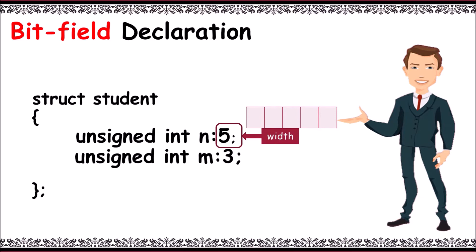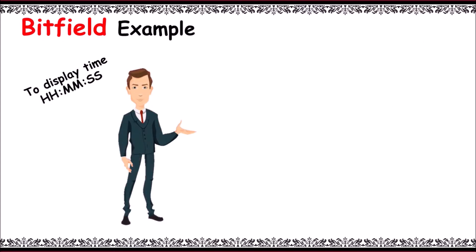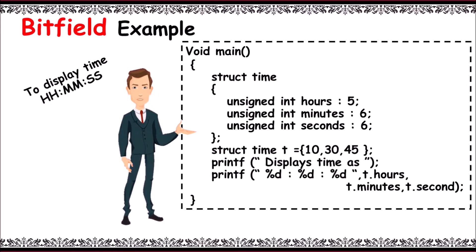Next, bitfield example to display the time. Let's start main. Structure time, now unsigned int hours colon 5. Here hour occupies 5 bits as we know maximum hour value is 24. It can be represented in 5 bit positions, that is 0 to 24, any number can be represented using 5 bit positions, so 5 will be the size.